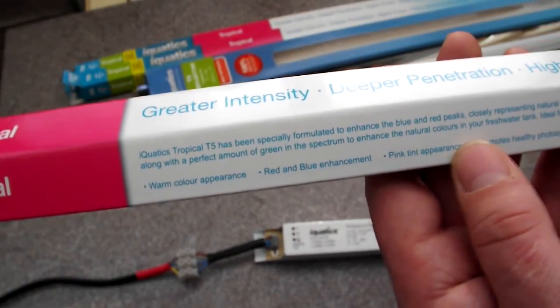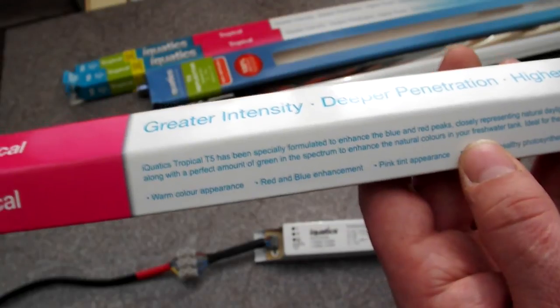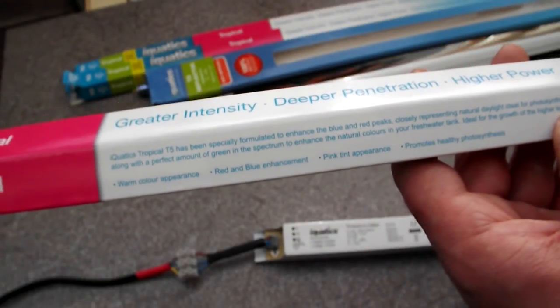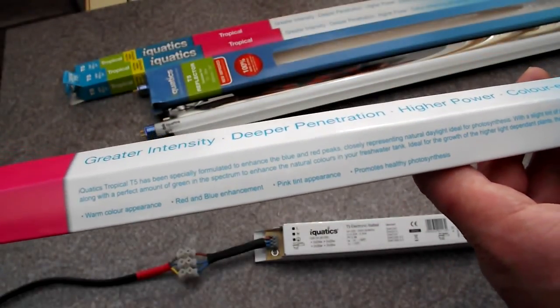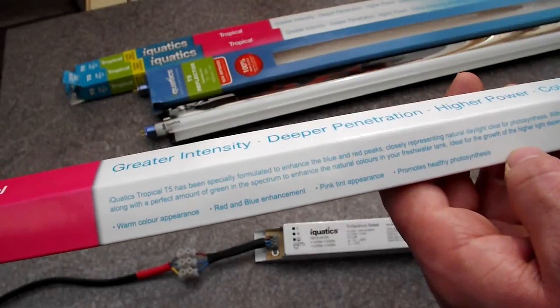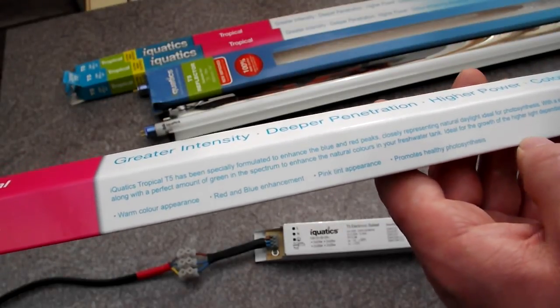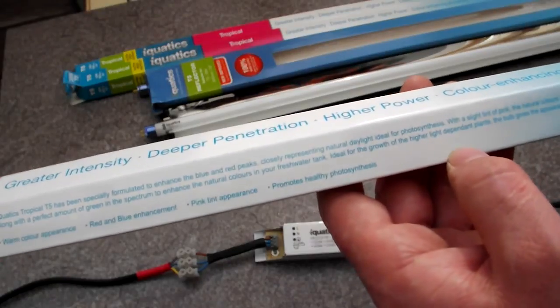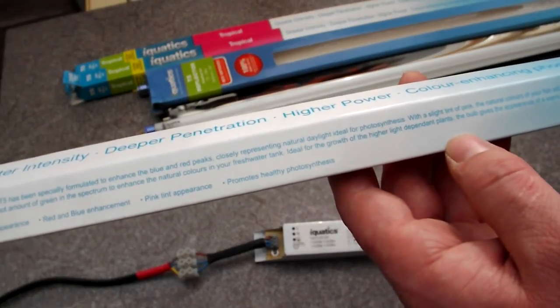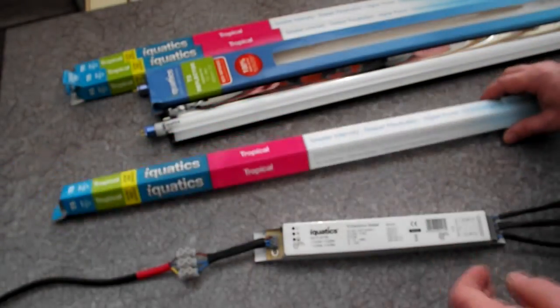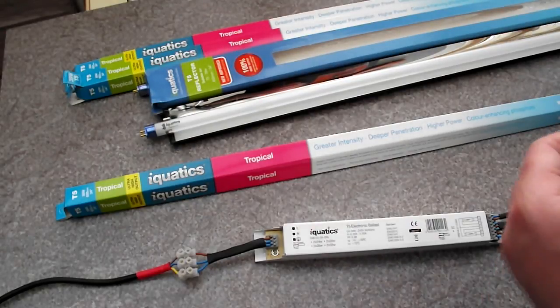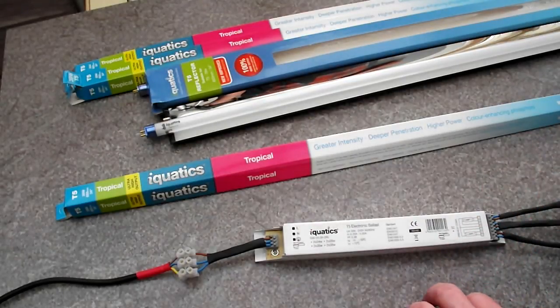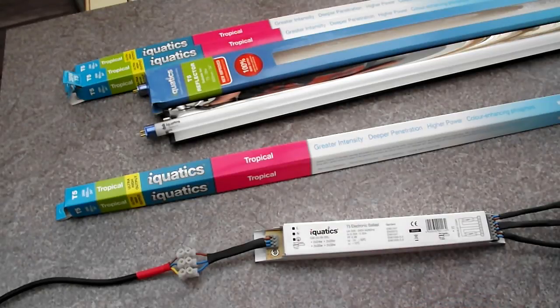They're specially formulated to enhance the blue and the red peaks closely representing natural daylight for photosynthesis. With a slight tint of pink, the natural colors of your fish will be enhanced along with a perfect amount of green in the spectrum to enhance the natural colors in your freshwater tank. Ideal for the growth of higher light dependent plants, the bulb gives the appearance of a warm tropical tank. The reason why I've gone for T5 is that it will penetrate to the bottom, allowing me to grow some quite hard carpet plants which I've never tried in the past.